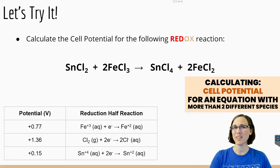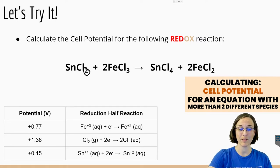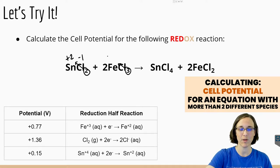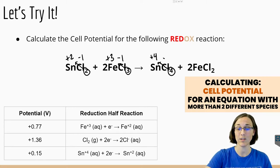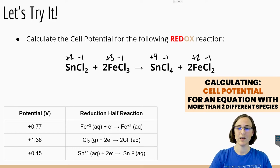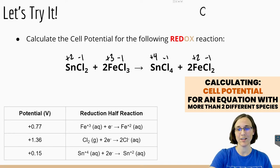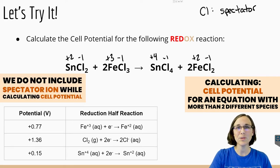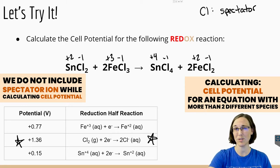What about an equation that has more than just two different species? First, we need to assign the charges throughout. By reverse drop and swap, tin has a plus two charge and chlorine has a minus one charge; iron has a plus three charge and chlorine has a minus one charge. On the other side, tin has a plus four charge and iron has a plus two charge, while chlorine still has a minus one charge throughout. Since the chlorines haven't changed charge anywhere throughout the entire reaction, chlorine is what we call a spectator ion — it's not doing anything, so we're not going to include it in the calculations. The fact that chlorine was included in the electric potential table was just to throw you off.